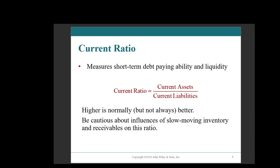So, current ratio. This can be expressed as either a number or a ratio. It takes your total current assets divided by your total current liabilities. In general, higher is usually better.